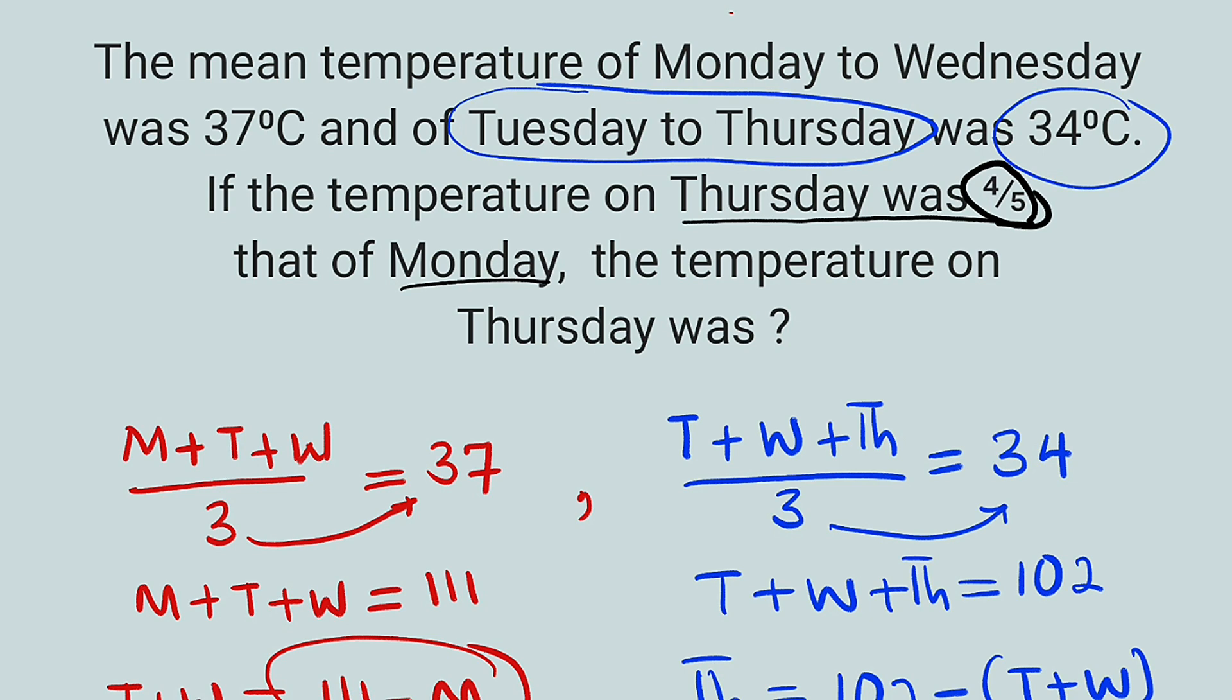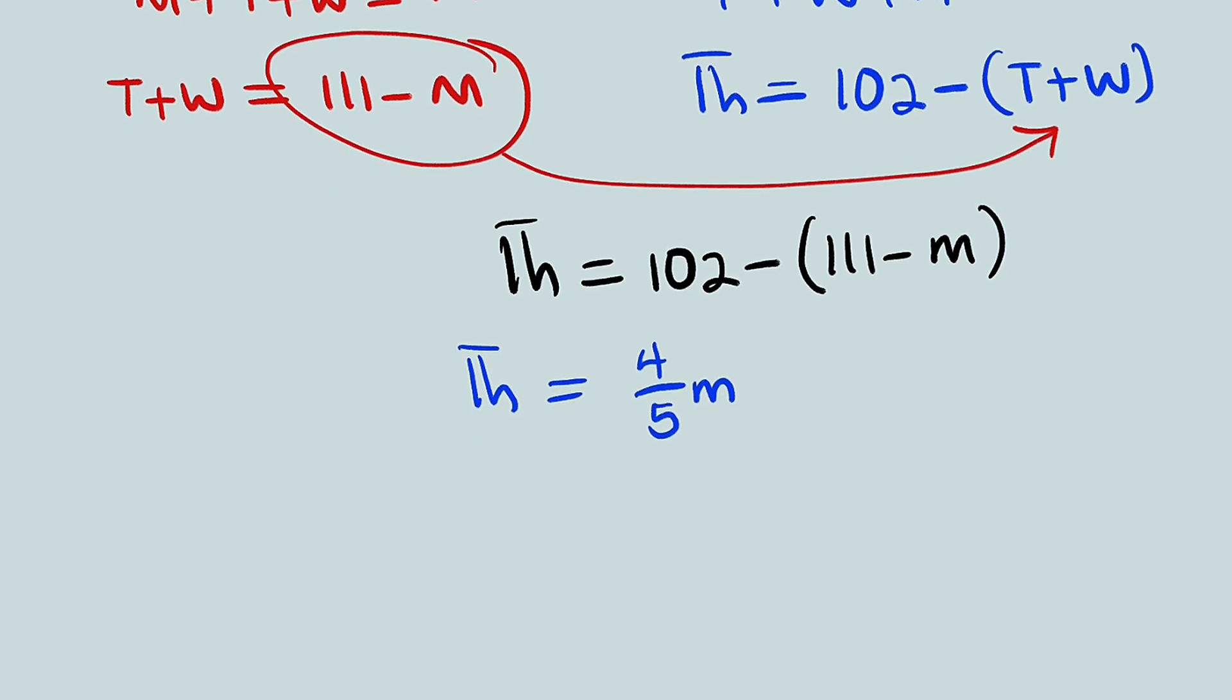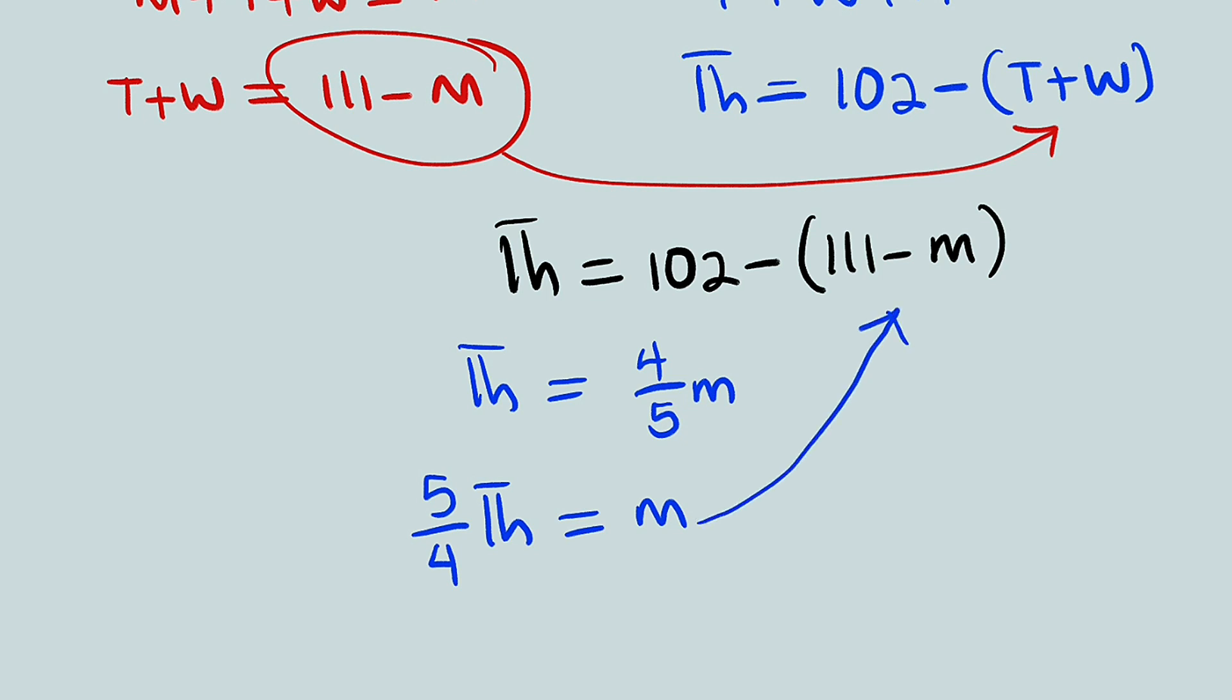So it means that TH is now equal to 4 over 5 M. If you multiply both sides by the reciprocal of 4 over 5, you have that 5 over 4 multiplied by TH is now equal to M. So we can substitute M into this equation where we have 111 minus M. So we can replace M with 5 over 4 TH.